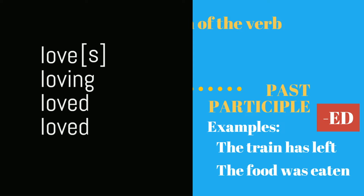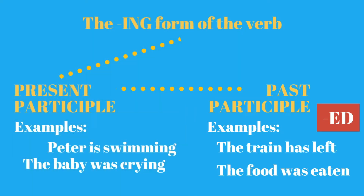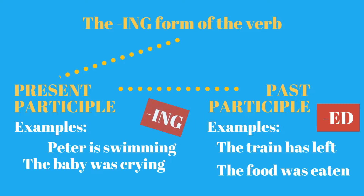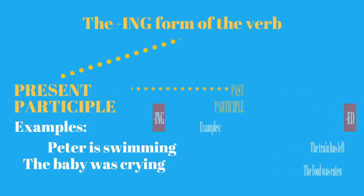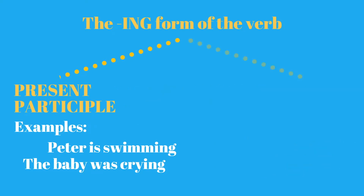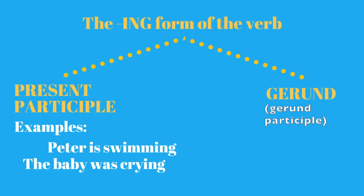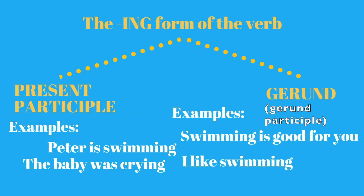But in some irregular verbs, such as "eat" or "give," the third and fourth forms are different. But that's all a different story. The other way of using the -ing form of the verb is as a gerund — sometimes called a gerund participle — that is, as the noun form of the verb.